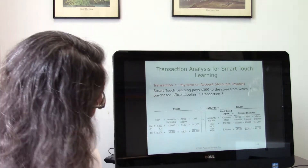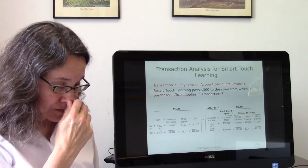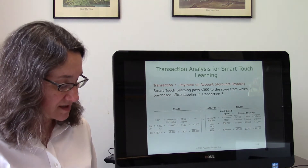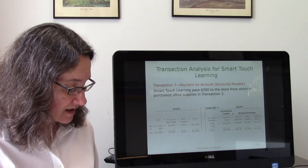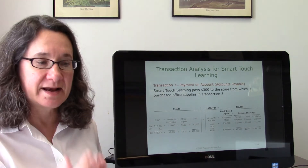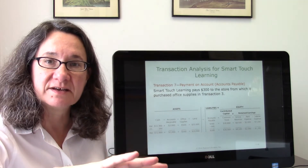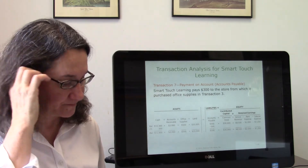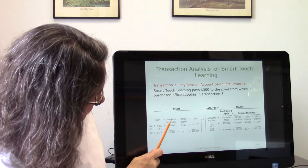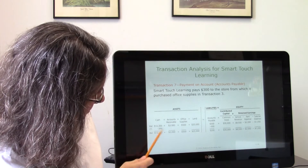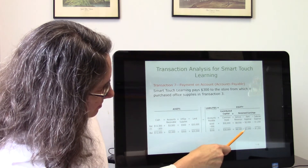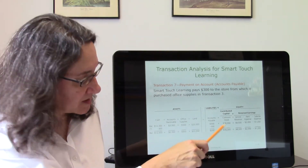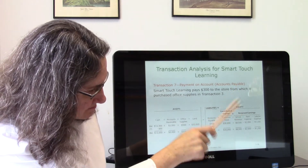In transaction seven, Smart Touch Learning pays $300 toward the office supplies it purchased on account earlier. This decreases cash by $300 — when cash leaves, the asset cash decreases. And we also decrease the accounts payable liability by $300, since we've partially paid what we owed. Asset decreased on the left and liability decreased on the right — the equation stays balanced.